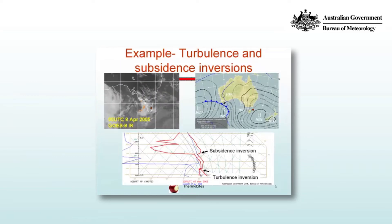Here we have a case where there is a low pressure system to the west of Tasmania and a strong pressure gradient between that low pressure system and the high, producing fresh to strong northerly winds. You can see a subsidence inversion at 10,000 feet and there's our turbulence inversion at about 5,000 feet.